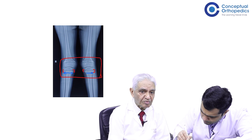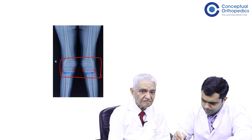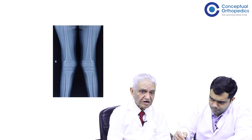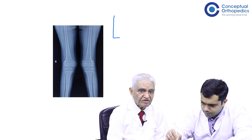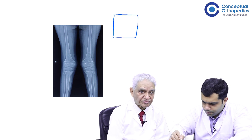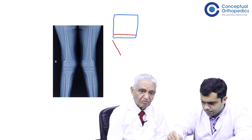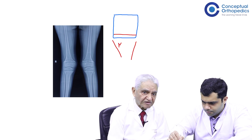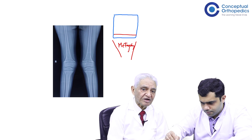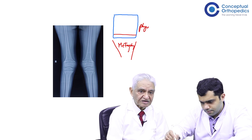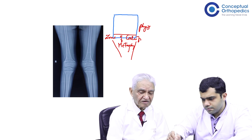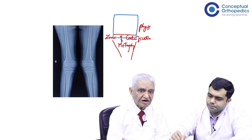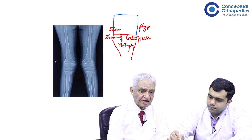Why does the growth plate look widened or thicker? The growth plate forms bone and adds it toward the metaphyseal part. If there is a deficiency in osteoblastic activity, the growth plate is forming the matrix but it is not being mineralized. So it appears that the growth plate has become thicker or wider. And that is how the metaphyseal area becomes cup-shaped.